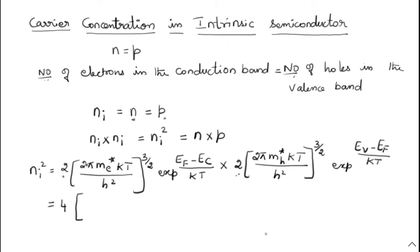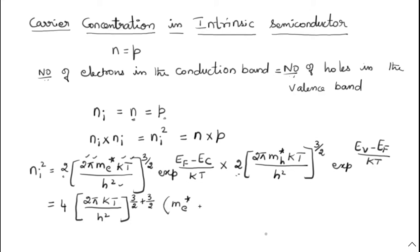Next, you see 2πKT/H² appears in both terms — all are common. So I am writing 2πKT divided by H². Here 3/2 is there and here also 3/2 — this whole term is in the product, so 3/2 plus 3/2. Remaining within the bracket are M_e* and M_H*, and M_e* has power 3/2 and M_H* also has power 3/2, so both are mentioned here.